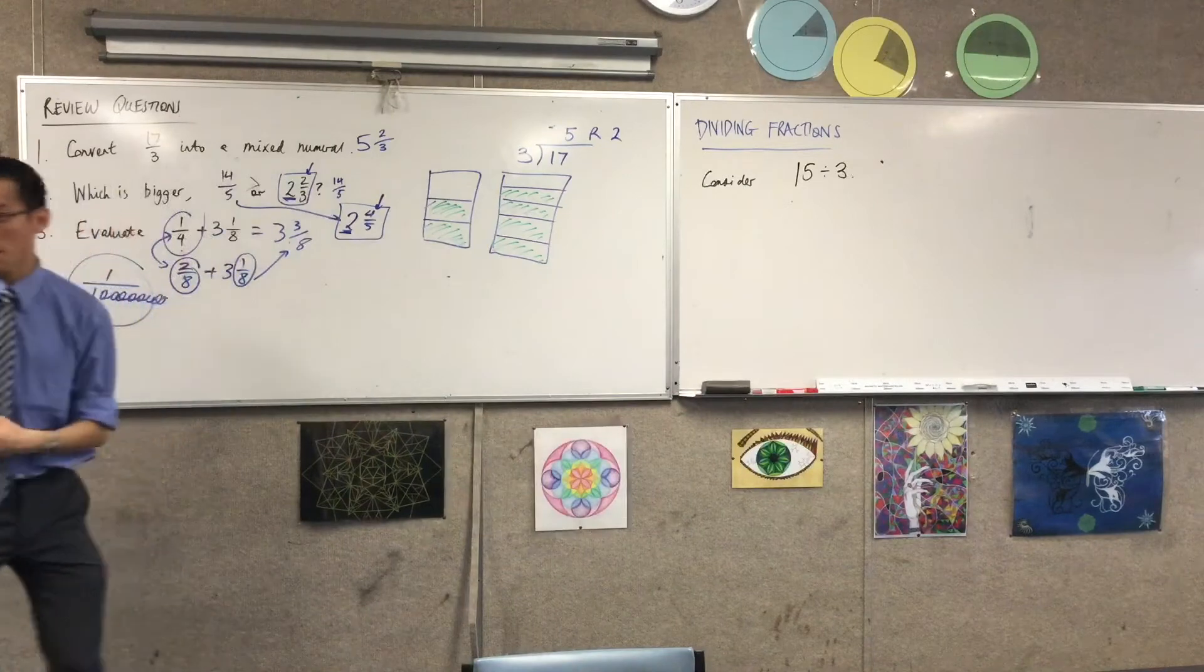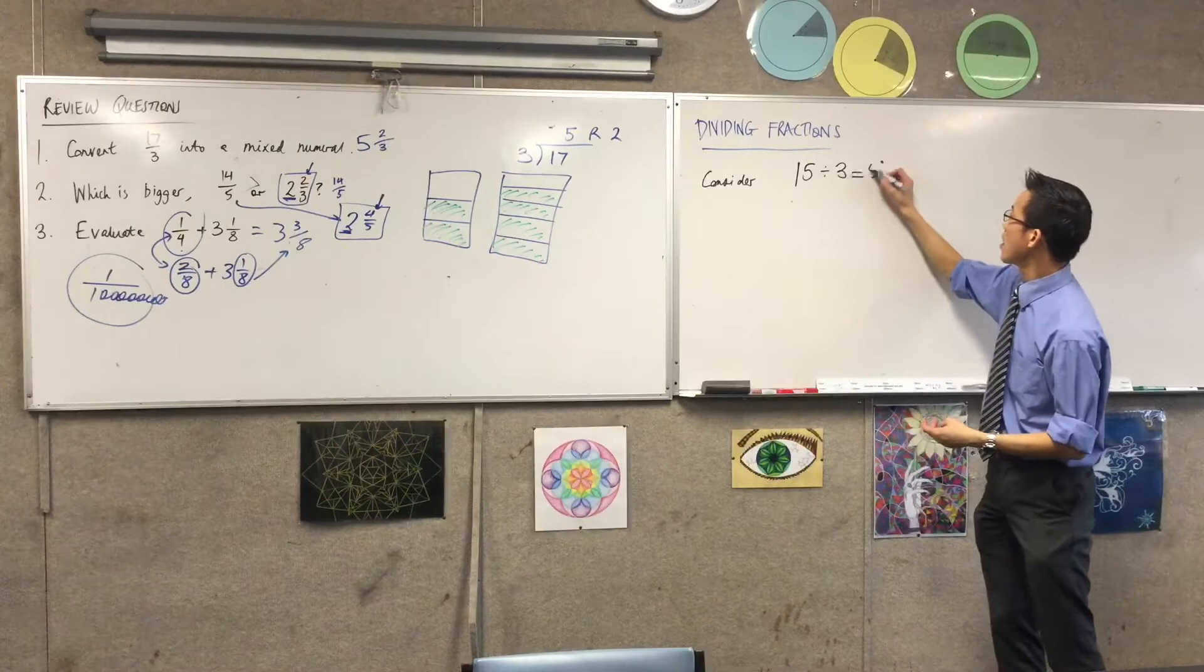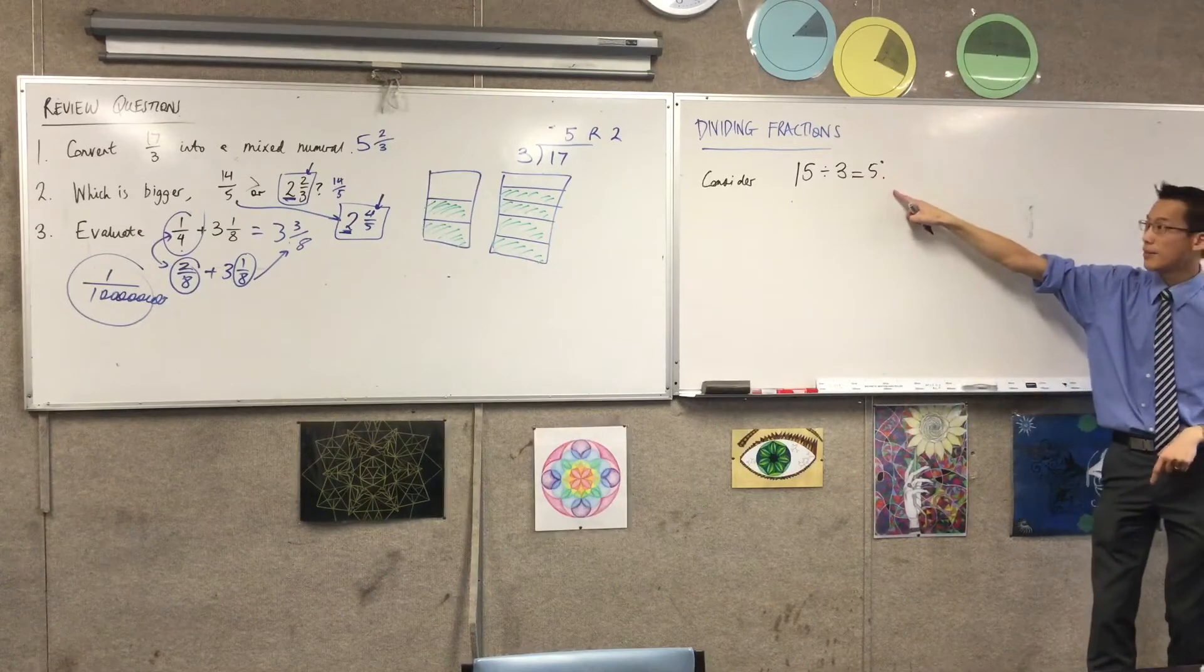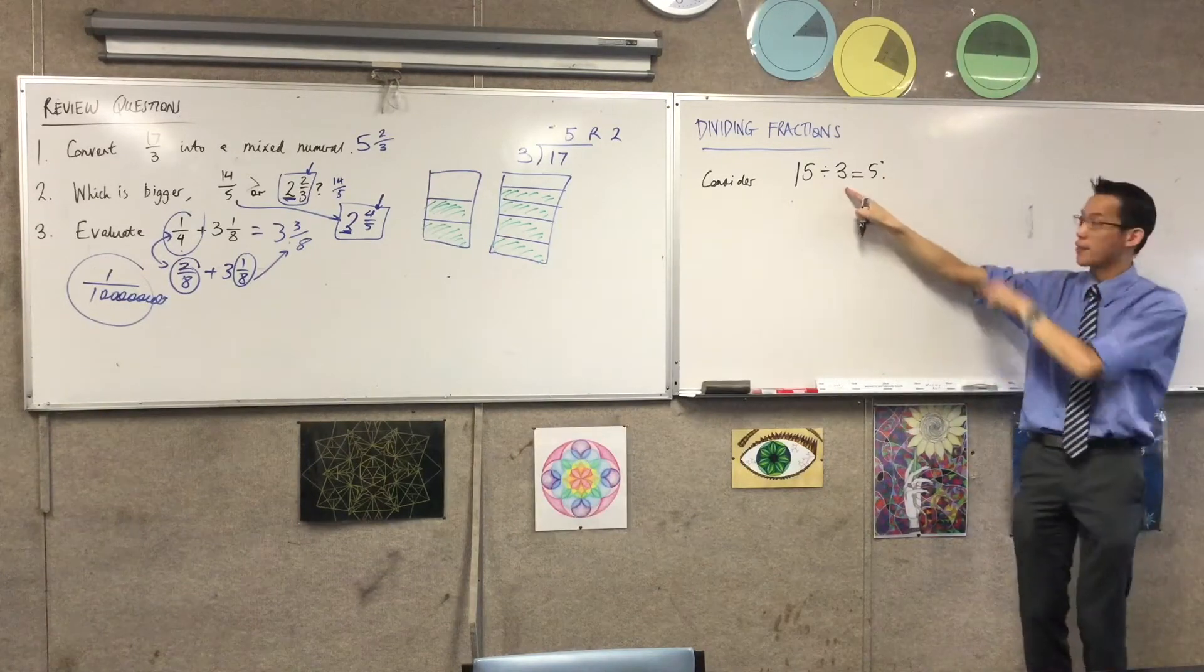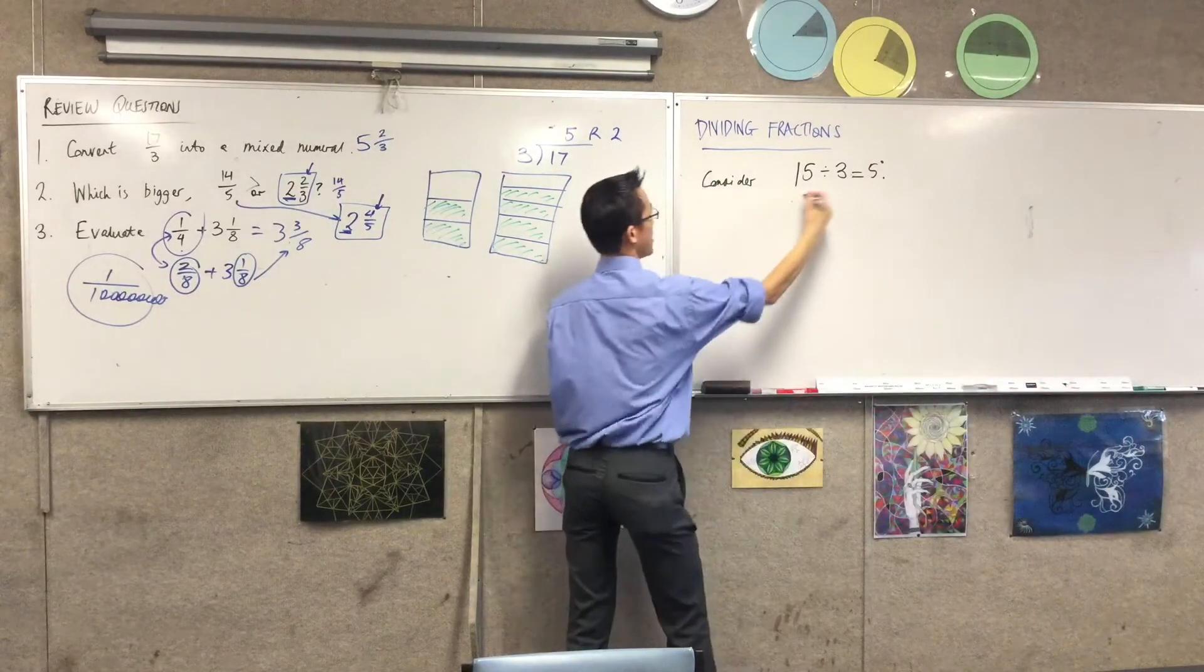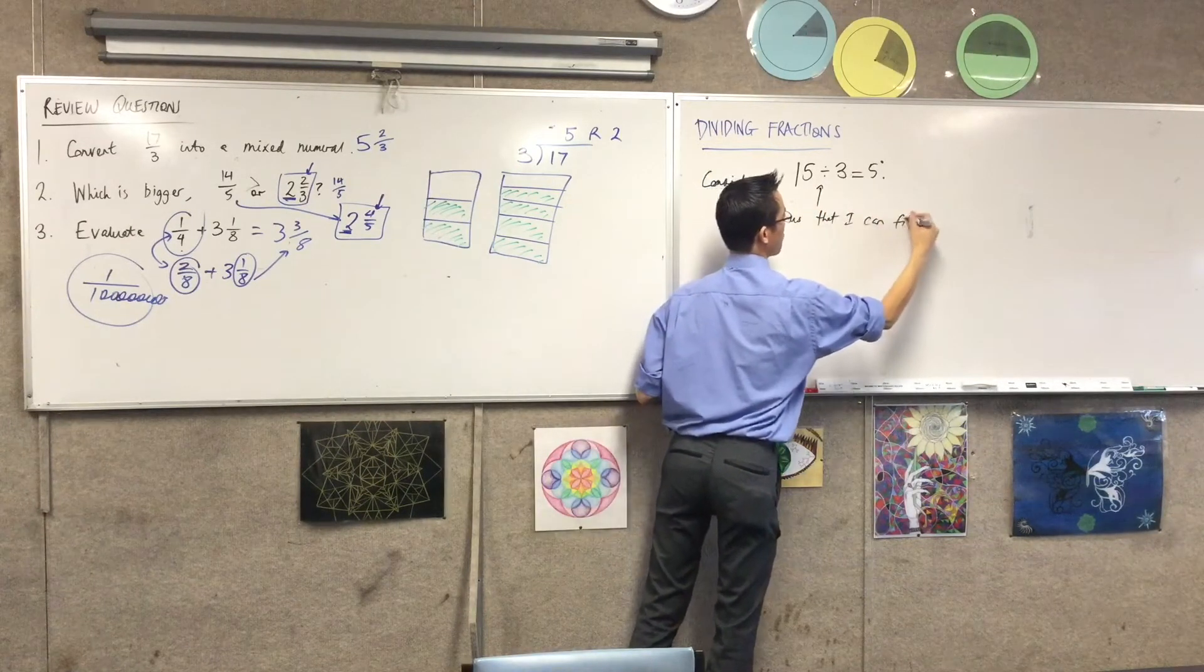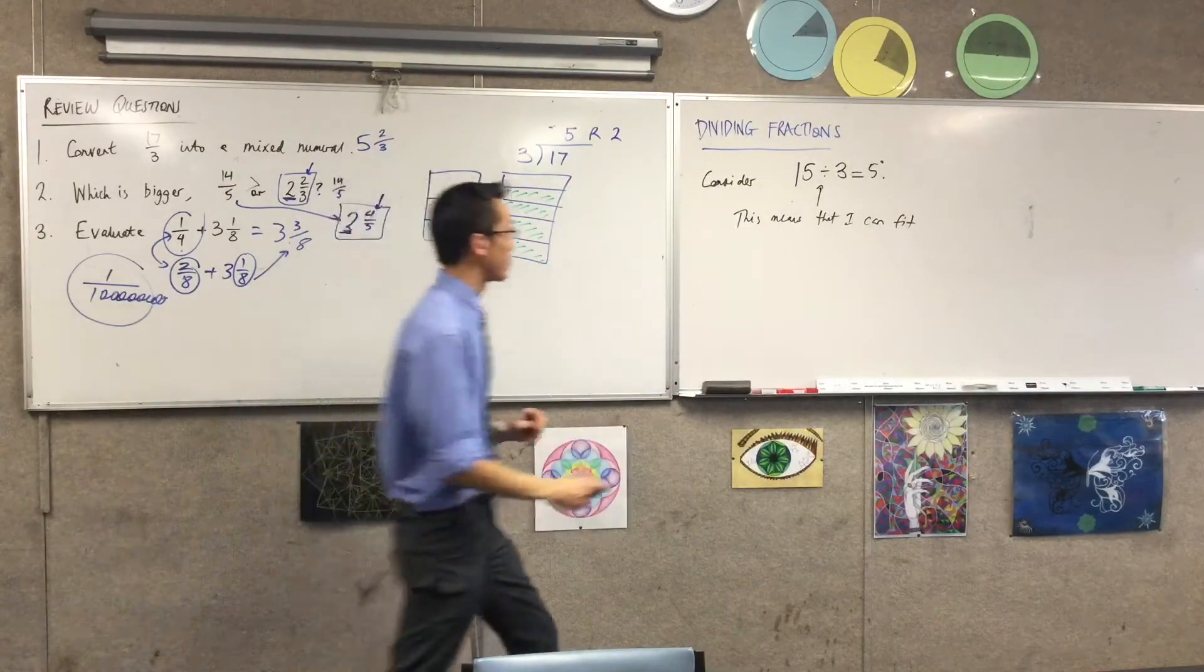15 divided by 3, of course, is? How many 3s go in? 5. So that's true. So what we're asking 15 divided by 3 and saying 5, what this means is 3 can fit 5 of them in here. Does that make sense? This means that I can fit 5 lots of 3 into 15.